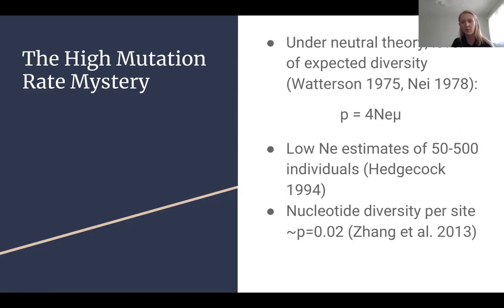you come to this estimate of mutation rate being 10 to the minus 5 for Pacific oysters. You can even reach estimates as high as 10 to the minus 6 if you have this upper limit of 500 individuals, which is extremely high for a mutation rate in any sort of eukaryote.